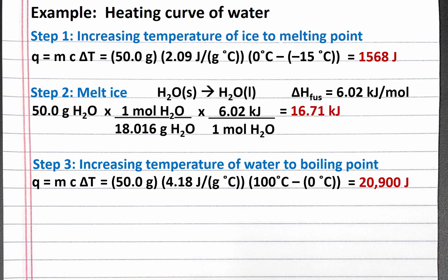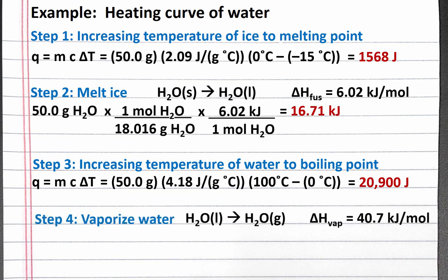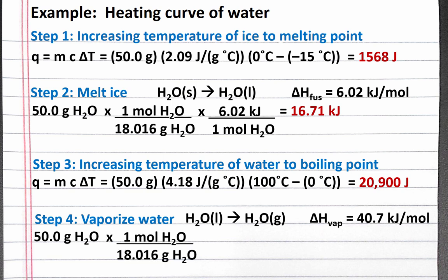Our fourth step is to vaporize the water. We're given the enthalpy of vaporization in the problem. We'll use dimensional analysis again, starting with 50 grams of H₂O. We can convert to moles using the molar mass of H₂O, and we can convert to kilojoules using the enthalpy of vaporization. Completing the calculation, we get 112.96 kilojoules.